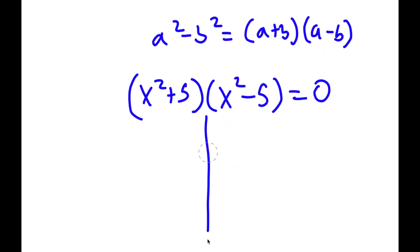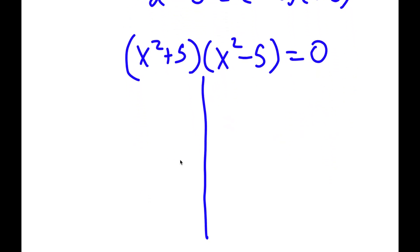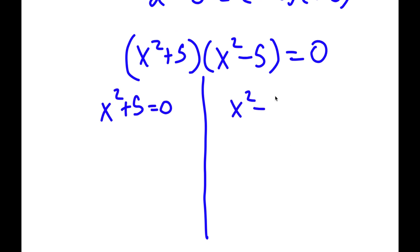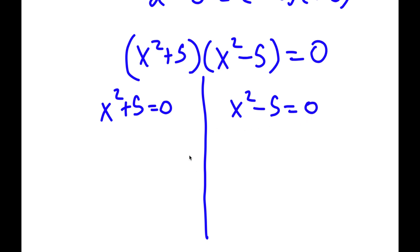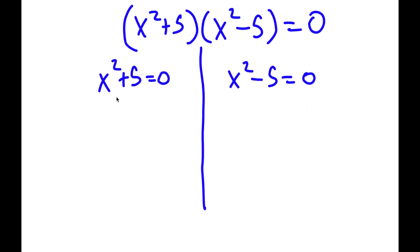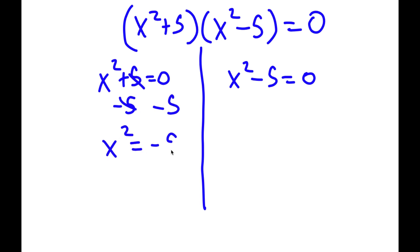So now this gives me two equations. I have x squared plus 5 is equal to 0, and I have x squared minus 5 is equal to 0. For x squared plus 5 equals 0, all I have to do is subtract 5 on both sides. These two cancel out, and I'll be left with x squared is equal to negative 5.